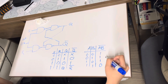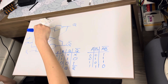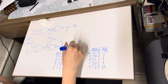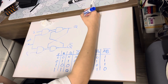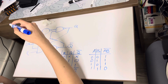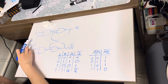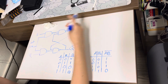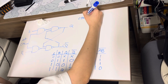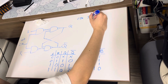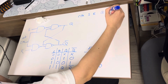For this problem, we want the characteristic table of the whole circuit, not just the SR latch or the NAND gate. We also introduce a clock signal, so we will have a truth table that has clock, S, and R as inputs, and then outputs for Q and Q-not.